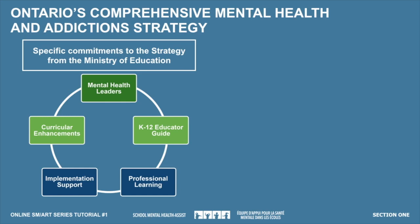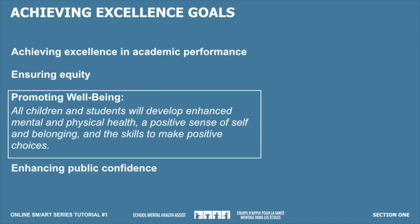Ontario has a comprehensive 10-year mental health and addiction strategy, which began in 2011. Open Minds, Healthy Minds describes the province's goals and directions. There were 14 ministries involved in building this strategy, and in the first three years, the Ministry of Education was one of the key players involved in many of the 22 initiatives introduced. Part of the strategy included the development of Supporting Minds, the introduction of mental health leaders within each school board, and the creation of School Mental Health Assist.